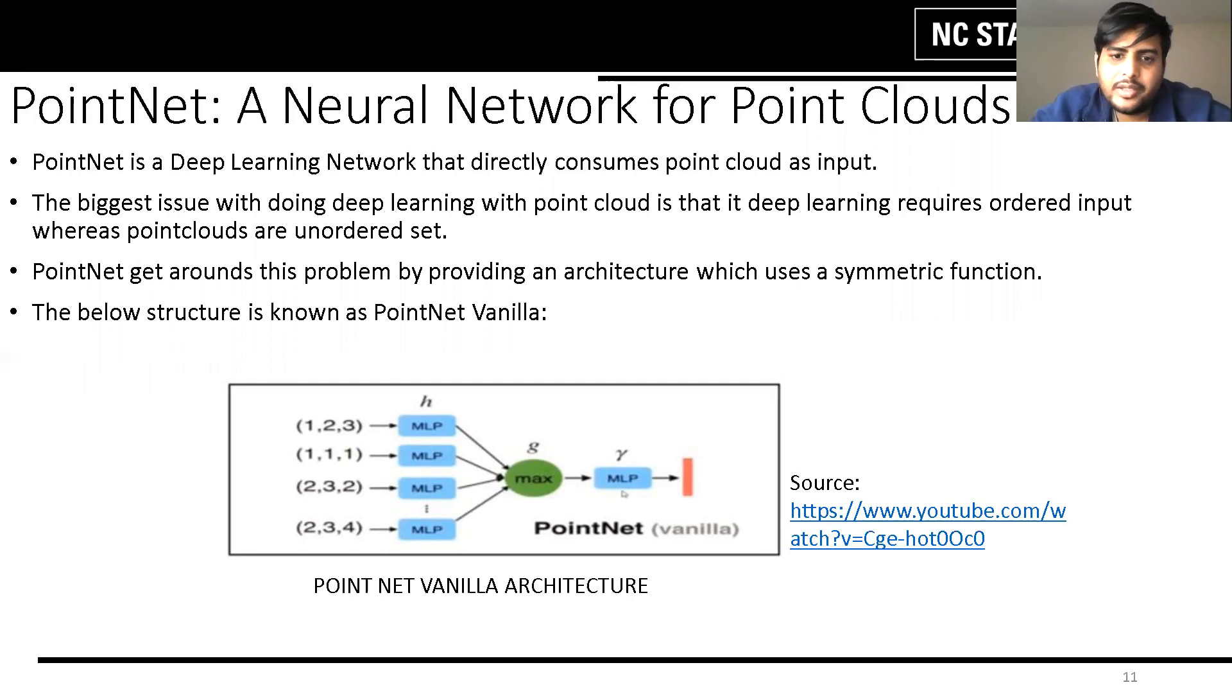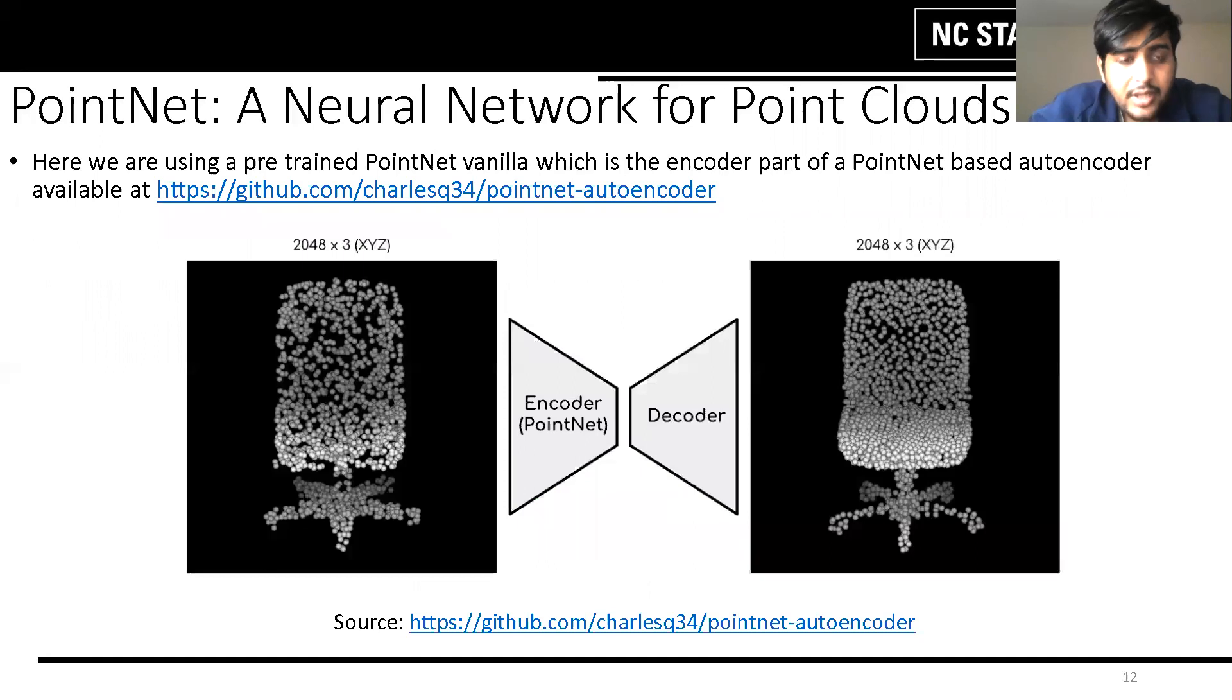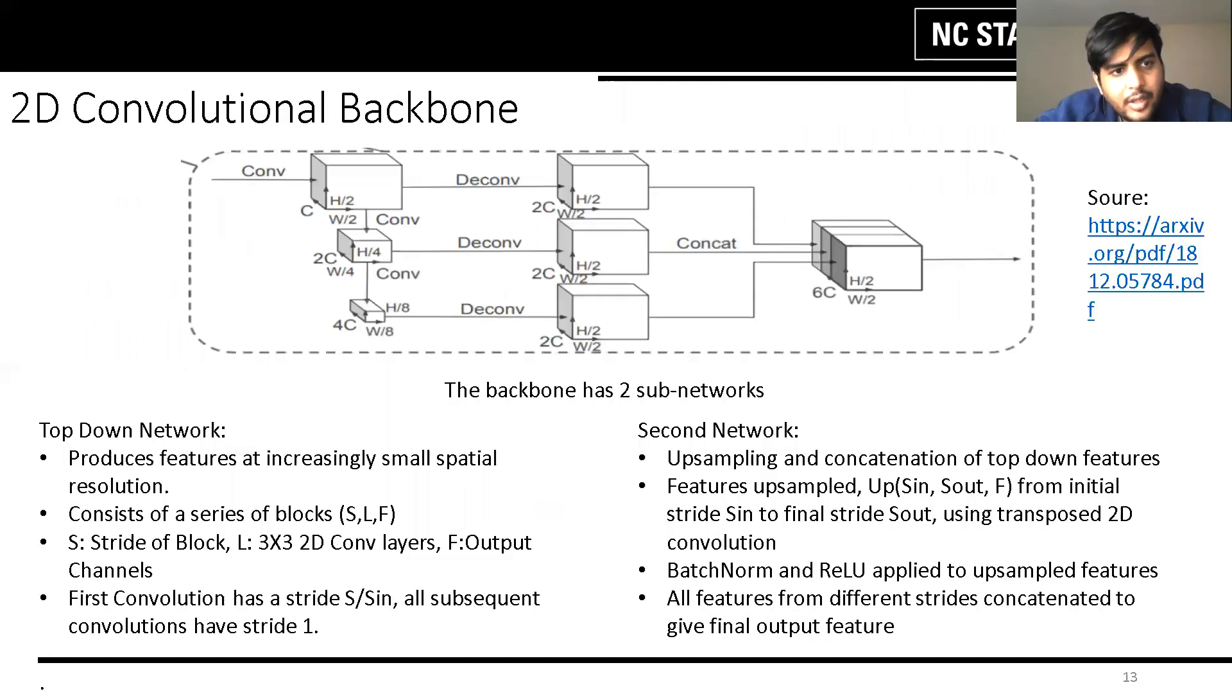After that we do another multi-layered perceptron and due to the max pooling, the function is no longer susceptible to incorrect order. Now here we are using a pre-trained PointNet auto encoder for our model and this model is available at the given link and we have used the model directly and we have also trained it even further. Now Adarsh will explain the working of 2D convolutional backbone.